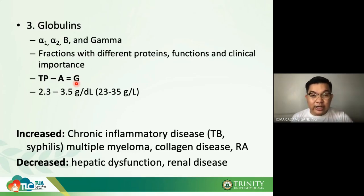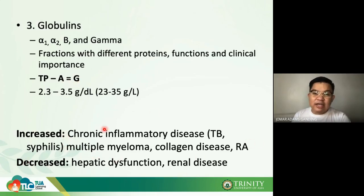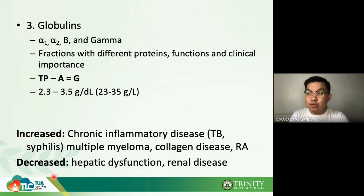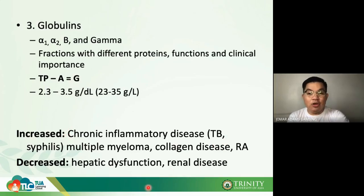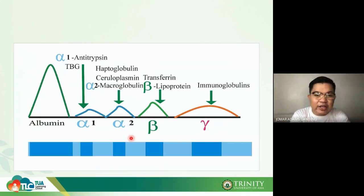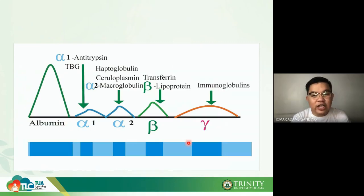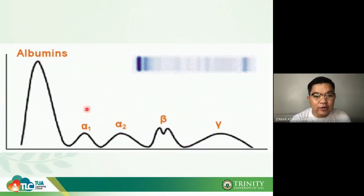Globulins have different fractions with different functions and different clinical importance. As you can see on screen, we have alpha-1 antitrypsin, haptoglobin in alpha-2, transferrin, and immunoglobulin. Let's start discussing each type following the electrophoretic pattern.